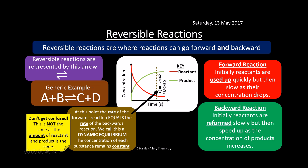At the point where both graphs start to flatten out, the rate of the forward reaction equals the rate of the backwards reaction, and we call this a dynamic equilibrium. The concentrations of reactant and product remain constant — both graphs go flat.